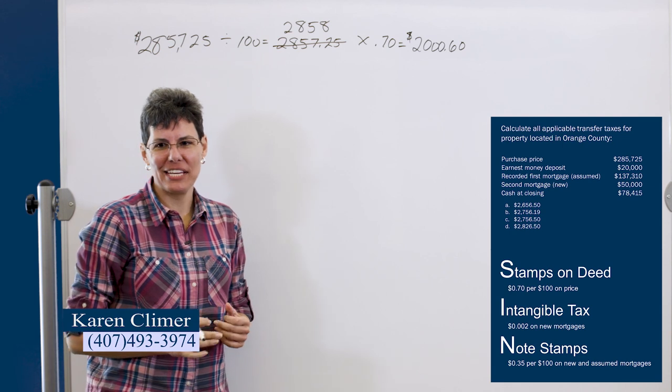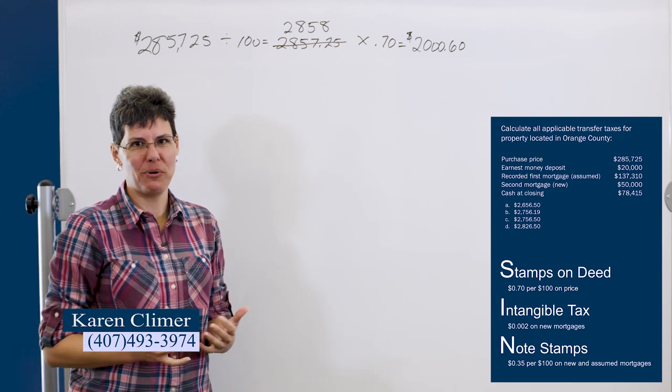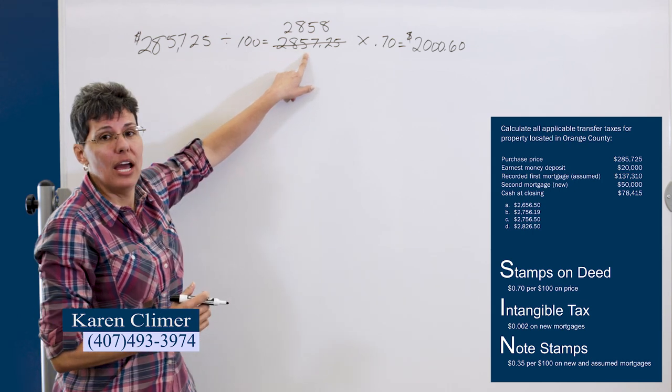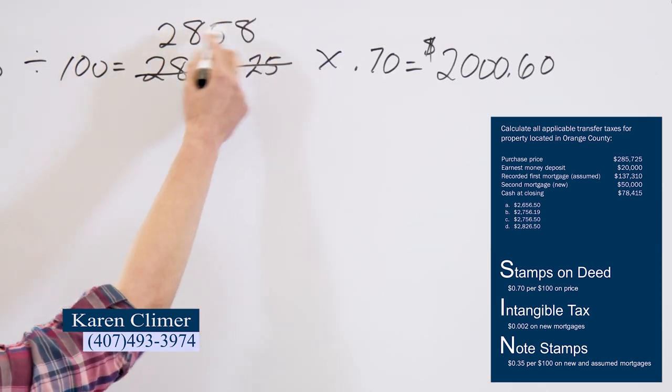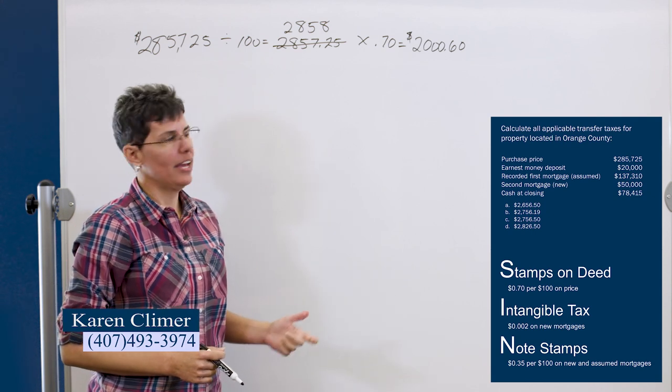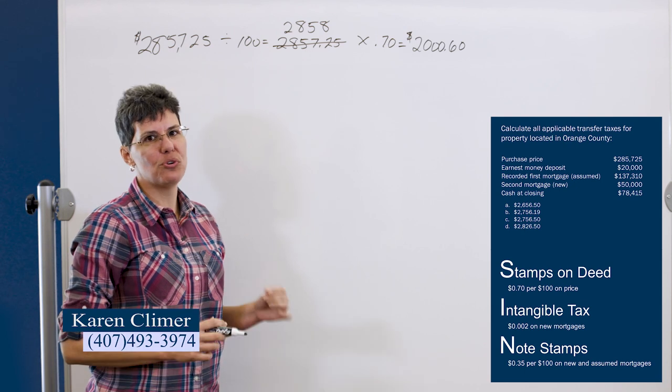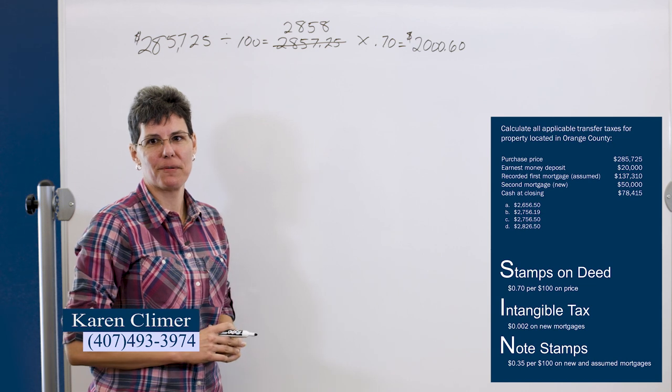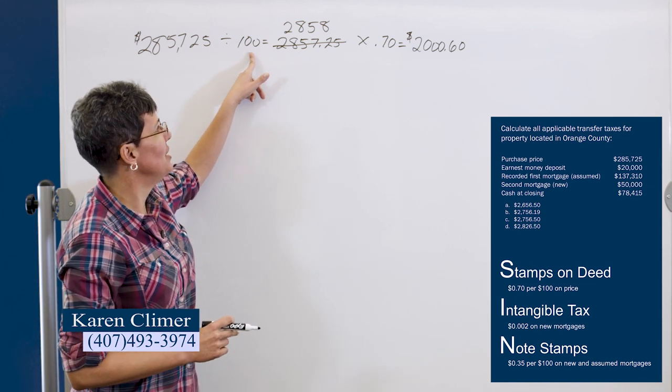And I want to tell you one thing about the calculator that a mistake a lot of students make. So I want to be sure you get this right. When you divide by a hundred and you get this number, a lot of students will cross it off and write the new number just like I did, but they forget to clear the calculator. And then they just multiply by 0.70. So be sure you clear your calculator. Once you get this, just be sure you clear your calculator. So these are the stamps on the deed.